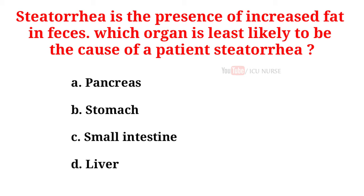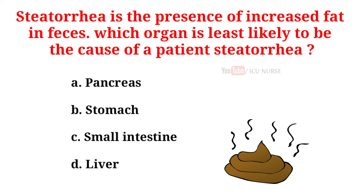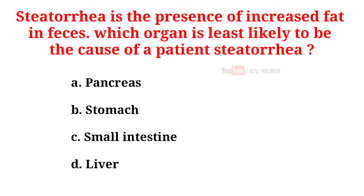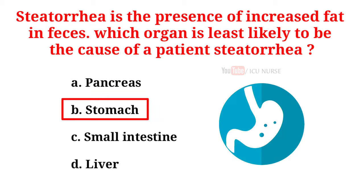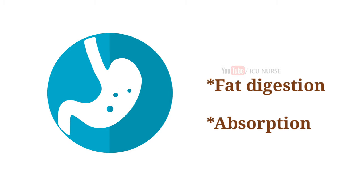Steatorrhea is the presence of increased fat in feces. Which organ is least likely to be the cause of a patient's steatorrhea? A. Pancreas. B. Stomach. C. Small intestine. D. Liver. And the correct answer is B. Stomach. The stomach plays the least role in fat digestion and absorption and would be the least likely to cause steatorrhea.